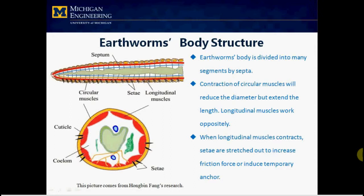In terms of body structure, there are three points need our concern. The first is the segmentation of the Earthworm's body. We see that the Earthworm's body is divided into many segments by septa. Each segment can work independently with no influence on adjacent segments.